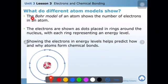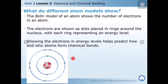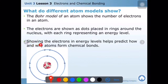The Bohr model of the atom shows the number of electrons in an atom. Electrons are shown as dots placed in rings around the nucleus, with each ring representing an energy level. This is the first energy level, this is the second energy level, and elements with more protons and electrons will have a third, fourth, fifth, sixth energy level and so on. Showing electrons in energy levels helps predict how and why atoms form chemical bonds.